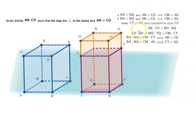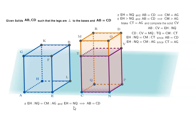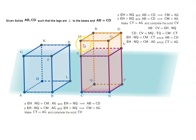Now let's look at the converse: we are given two solids whose bases are reciprocally proportional to their heights. If EH to NQ equals CM to AG and EH equals NQ, then AB equals CD. But if EH to NQ equals CM to AG and EH is greater than NQ, implying CM is greater than AG, we repeat the same construction: make CT equal to AG and complete solid CB.